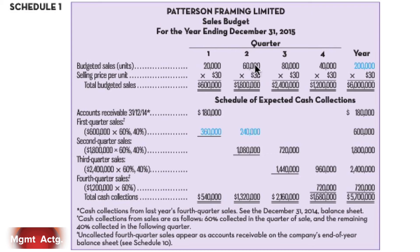This first line becomes an input to another budget. If we're going to sell this many units, we have to make at least that many units. Let's deal with the schedule of expected cash collections because this can get tricky. If we're going to sell $600,000 in the first quarter, we need an assumption as to how we're going to collect the cash for those sales. If every sale has cash collected immediately, we don't have to worry. But if we sell on account, we may not get paid in that quarter, so we need an assumption of how cash is collected.